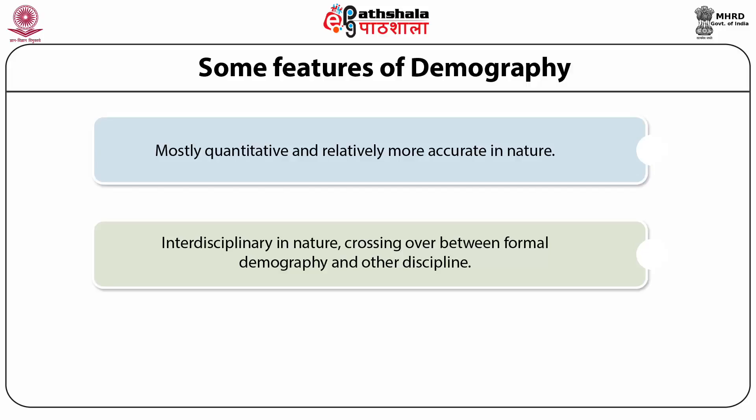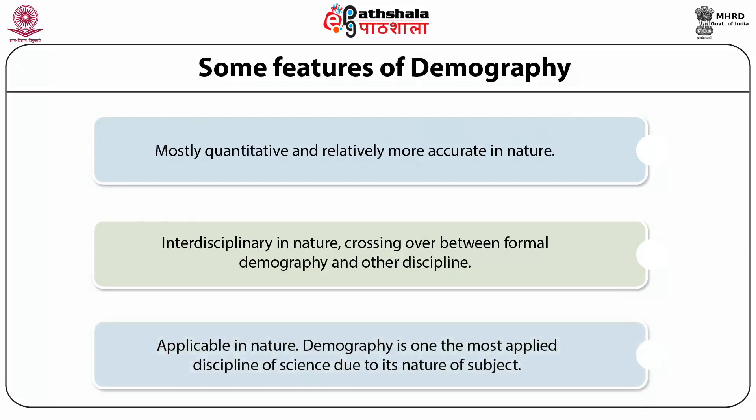For mortality study, it uses health sciences. A typical example of the interdisciplinary nature of demography is the national research institute called the Netherlands Interdisciplinary Demographic Institute, which is part of the Royal Netherlands Academy of Arts and Sciences.